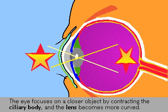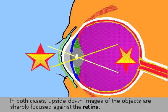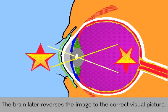In each case, the images are focused against the retina but are upside down. It is the brain that automatically reverses the image so that we perceive the correct visual image.